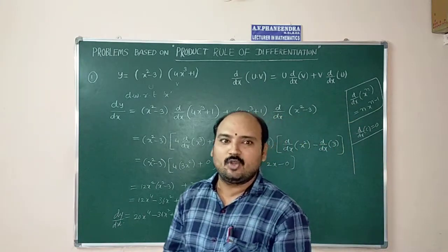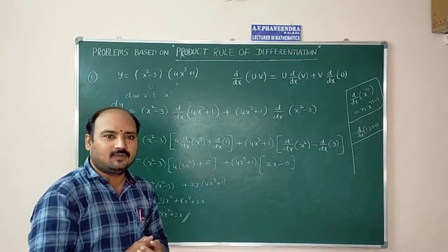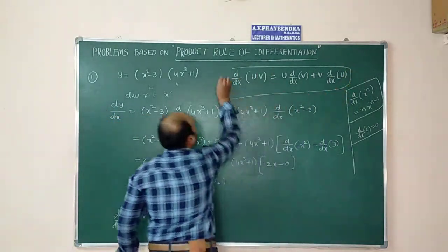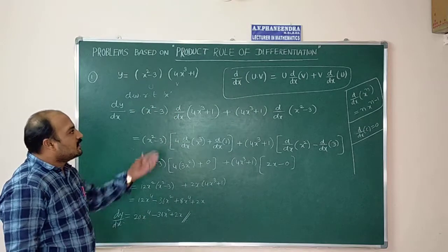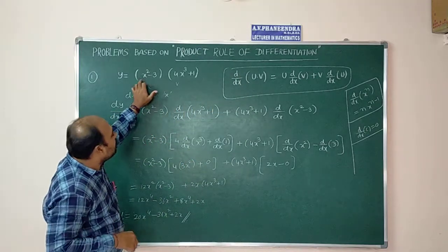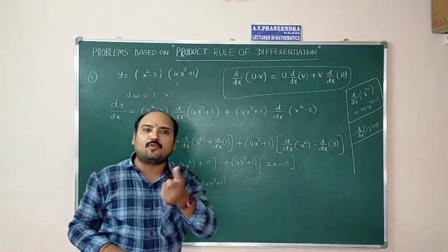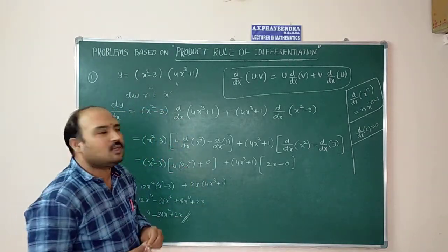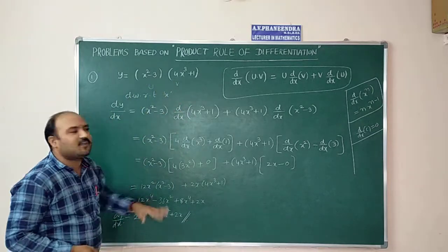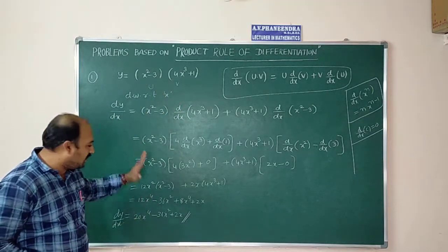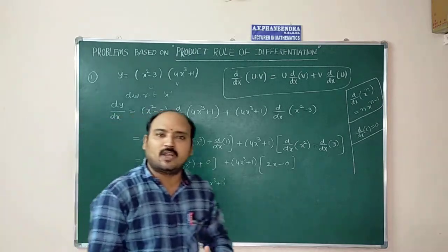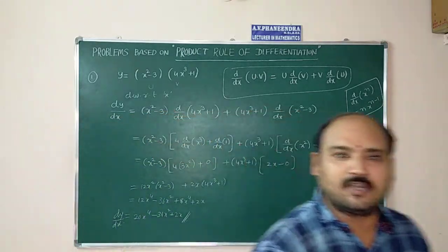Sometimes you can approach this differently — instead of using the u·v formula, multiply the two polynomials into a single polynomial first, then differentiate directly. You will get the same answer. That is the second approach.